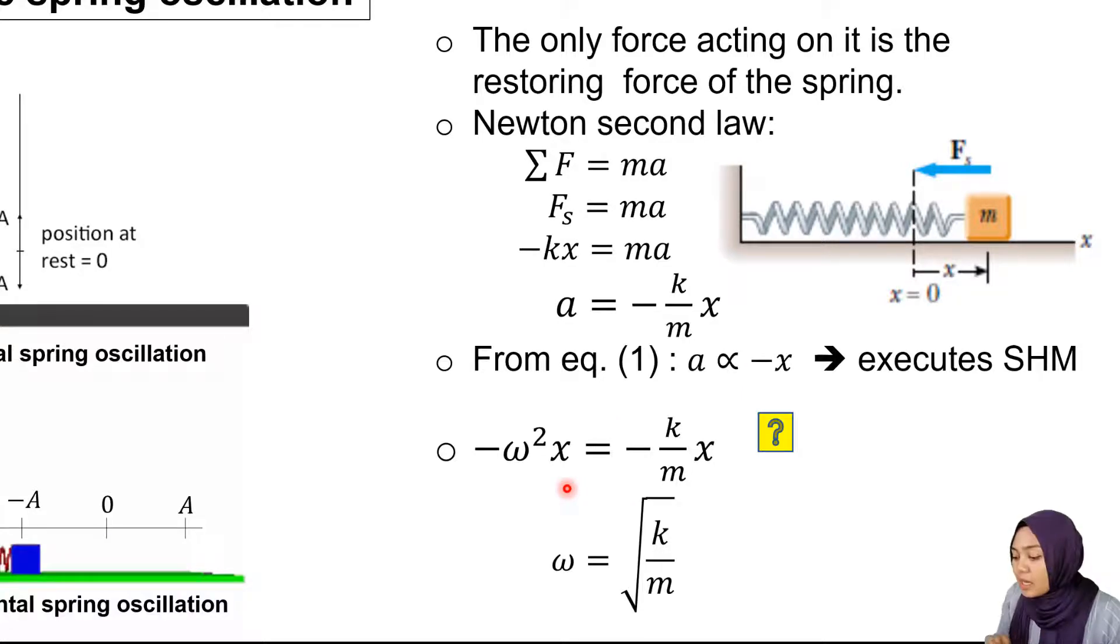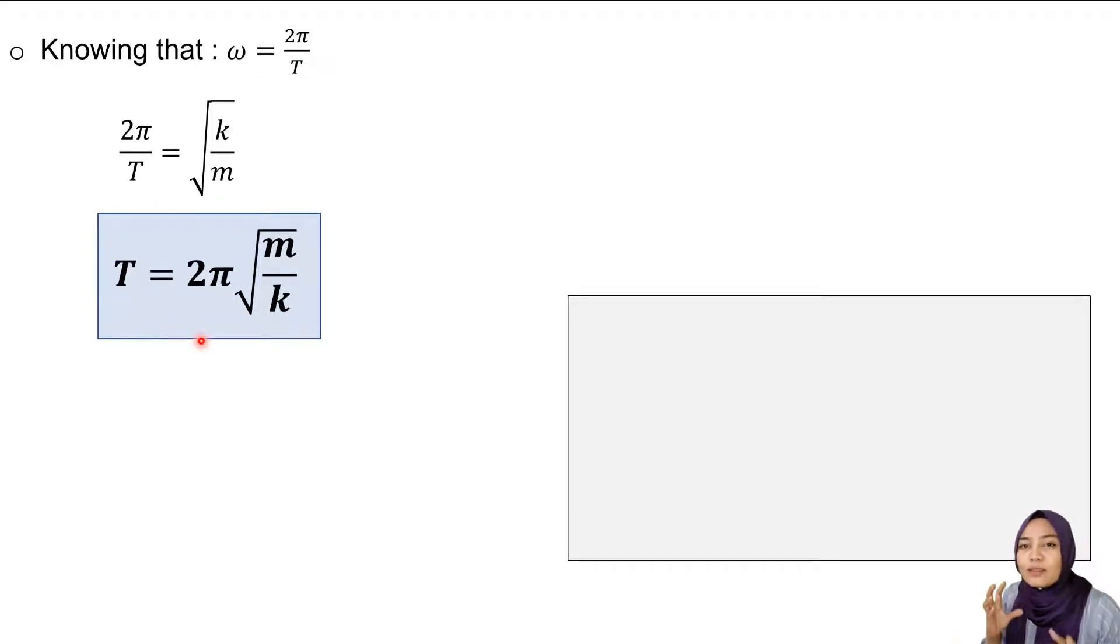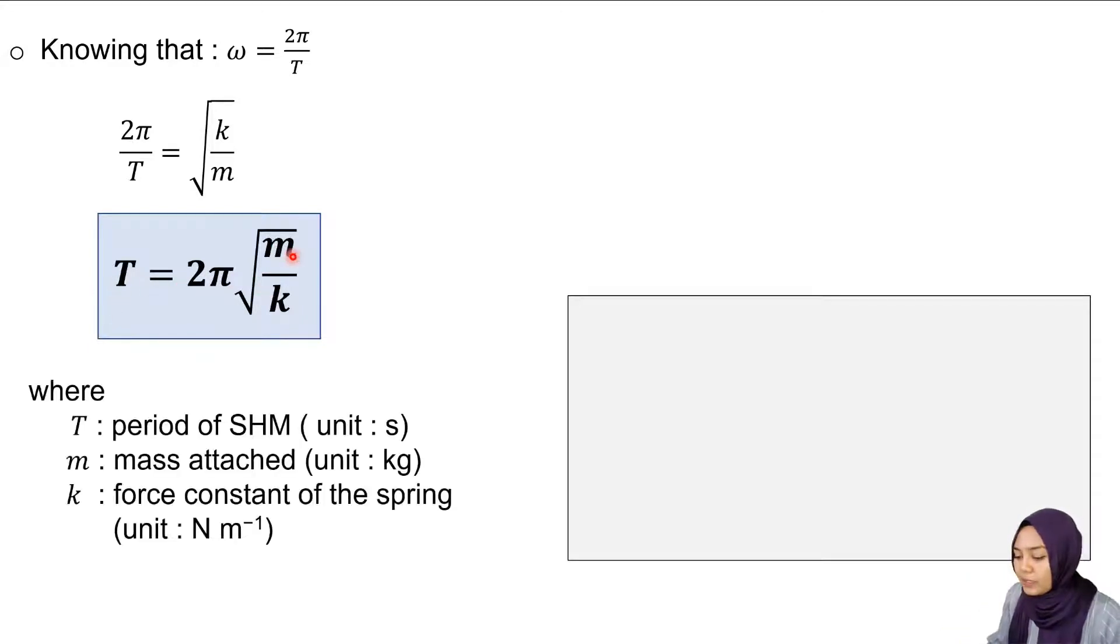From there we can get the angular frequency ω = √(k/m) where k is the spring constant and m is the mass of the block. We know that ω = 2π/T where T is the period. When we rearrange it, we get T = 2π√(m/k).